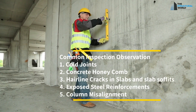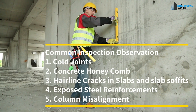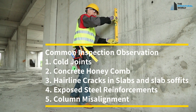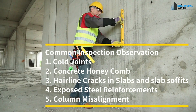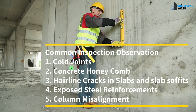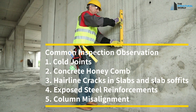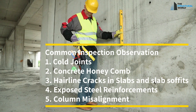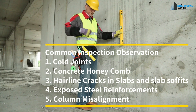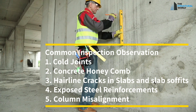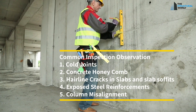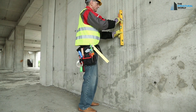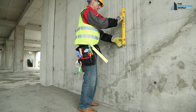Common defects include: cold joints, concrete honeycomb, hairline cracks in slabs and slab soffits, exposed steel reinforcement due to insufficient concrete cover, and misalignment due to bad formworks during casting.